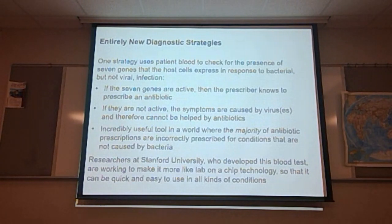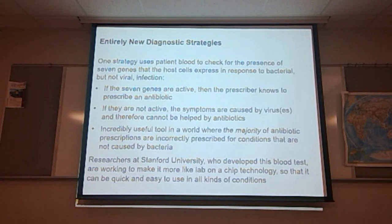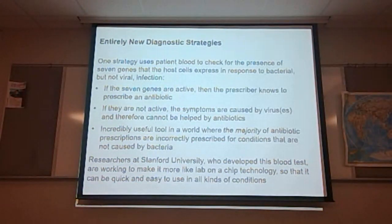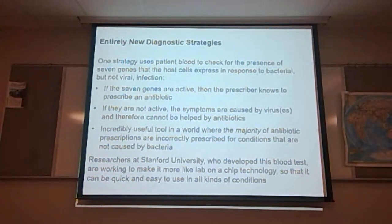Some entirely new diagnostic strategies are emerging. One strategy uses a patient's blood to check for the presence of seven genes that the host cell expresses in response to bacterial but not viral infections. If those seven genes are active, the prescriber knows to prescribe an antibiotic. If they are not active, the symptoms are caused by a virus and cannot be helped by antibiotics. This is an incredibly useful tool, given that the majority of antibiotic prescriptions are incorrectly prescribed for conditions not caused by bacteria. Researchers at Stanford University who developed this blood test are working to make it more like lab-on-a-chip technology.